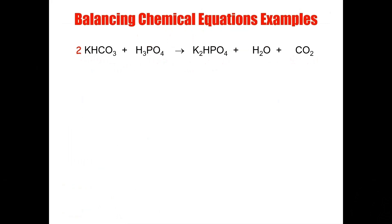We're going to do this step by step. The first thing I'm going to focus on is the hydrogen. I now have two hydrogen plus three hydrogen — you have to keep in mind you're taking the total amount of hydrogen on the reactant side and comparing it to the total on the product side. I have five hydrogen on the reactant side and only one plus two, three hydrogen on the product side. The fastest way to convert three hydrogen into five hydrogen is to add a two in front of this hydrogen, giving me four plus one — five hydrogen.